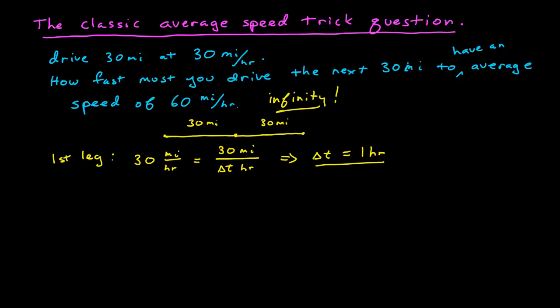So what we wanted to know though was the total. So for the total, we wanted to have an average speed of 60 miles per hour. So the average speed, 60 miles per hour, would be equal to the total distance. And the total distance is 60 miles. And so how long would we need to complete the entire trip to have an average speed of 60 miles per hour? Well, we can solve for Δt, and the answer is one hour.